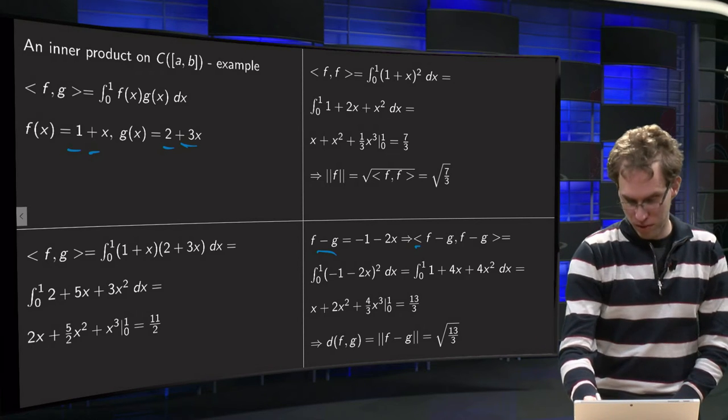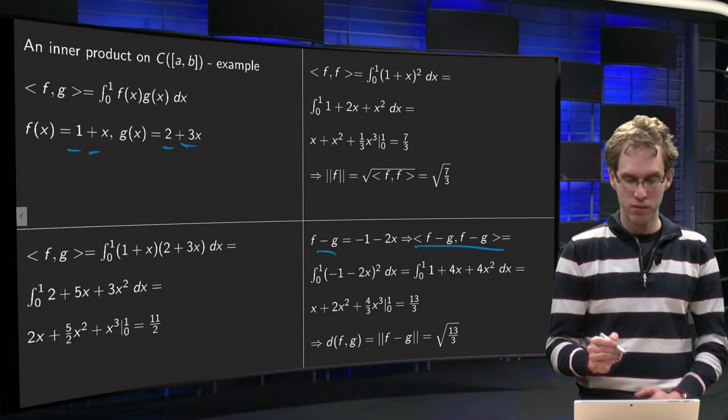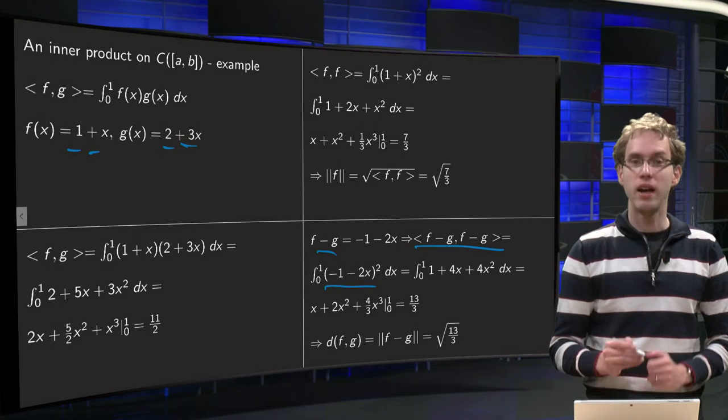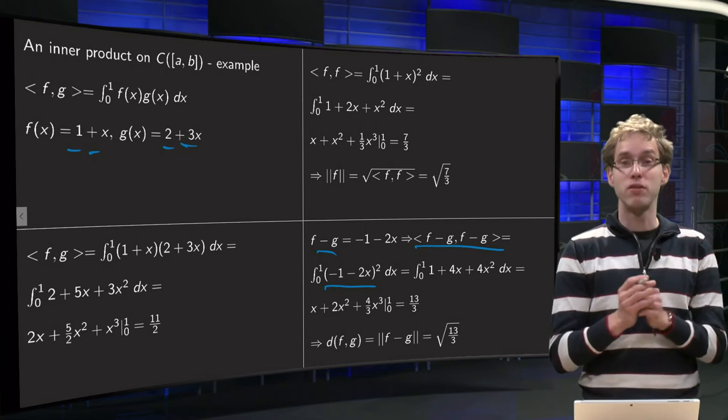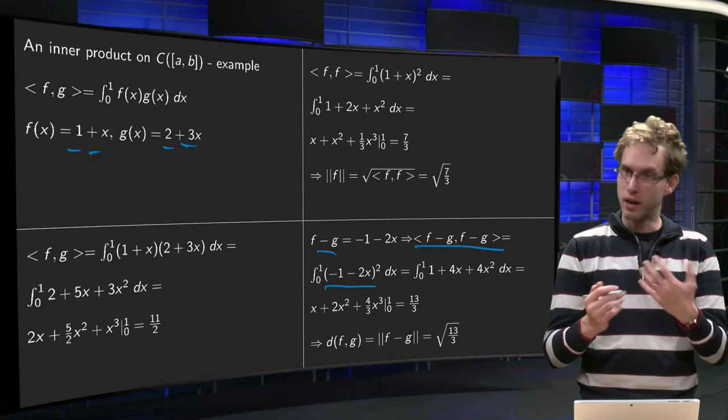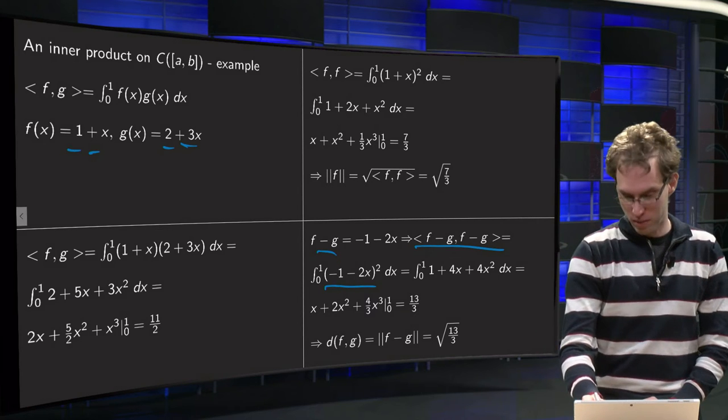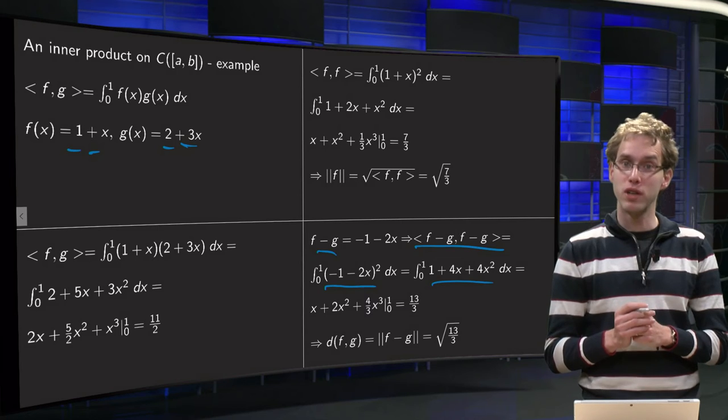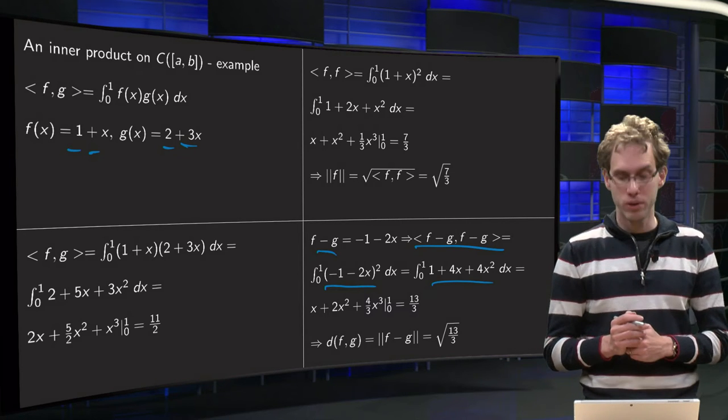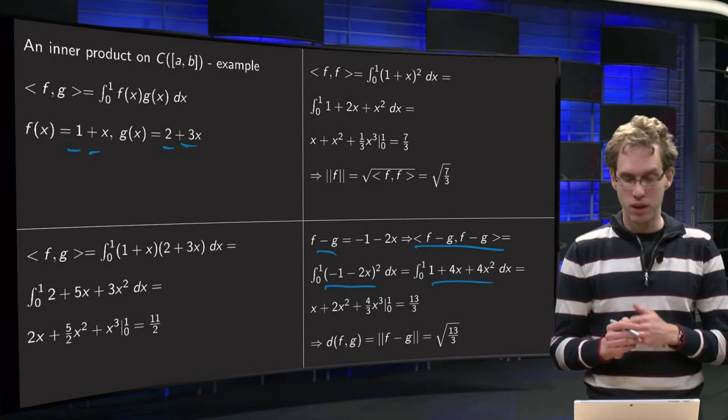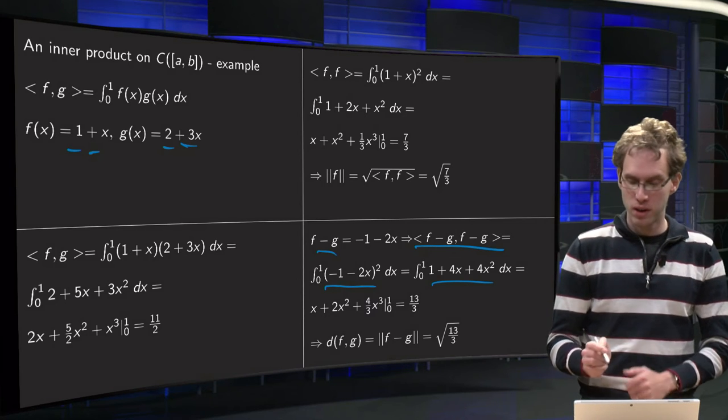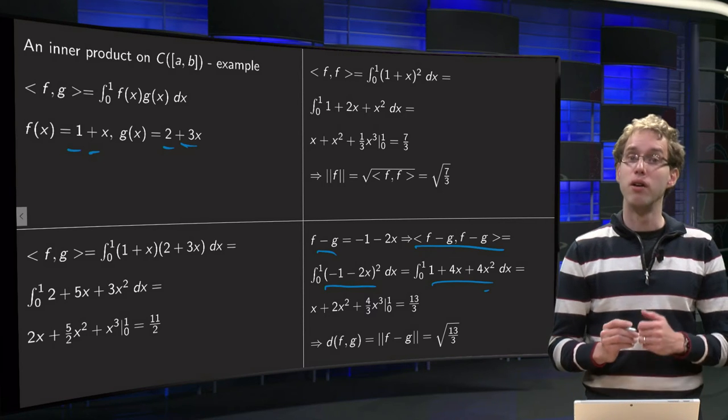So we compute the inner product of f minus g with itself. So we have to compute the inner product of minus 1 minus 2x squared. Again, work out the brackets to get 1 plus 4x plus 4x squared.